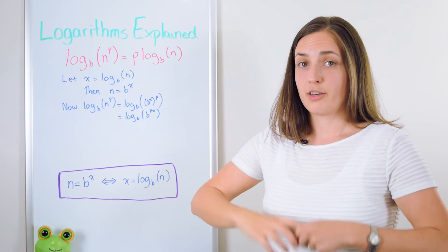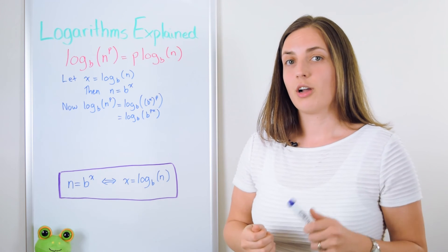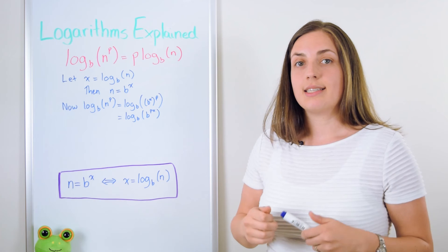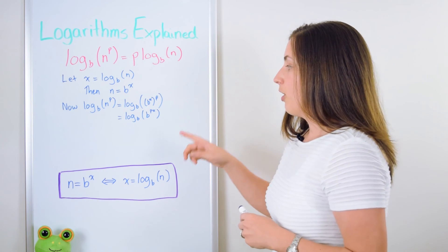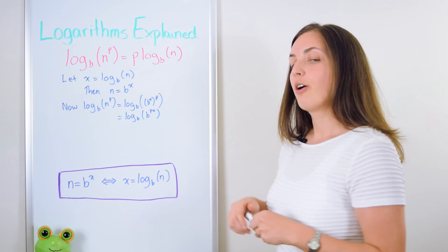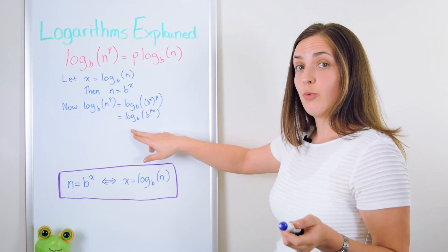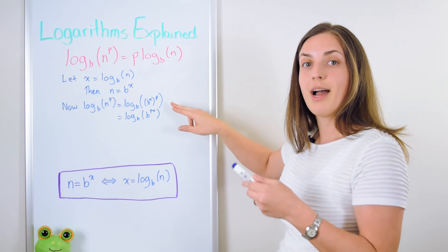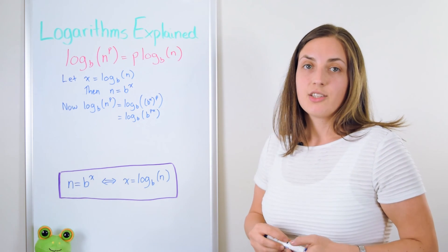Now let's look at the term we're actually trying to calculate. We're trying to figure out what is log base b of n to the power of p but now we know that n is equal to b to the power of x so we plug that in. Then we get log base b of b to the power p times x where p times x is the new power. But here we just have a logarithm base b of b to some power and we know that the answer there is always that power so the answer is px.